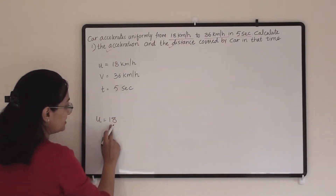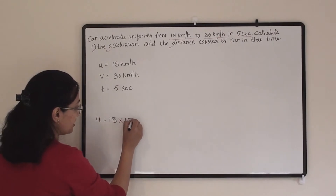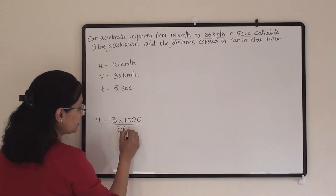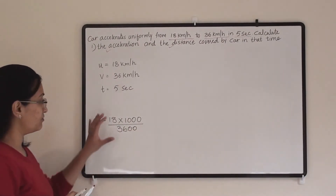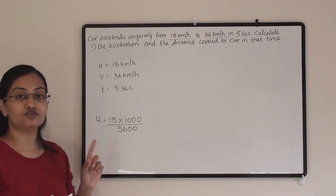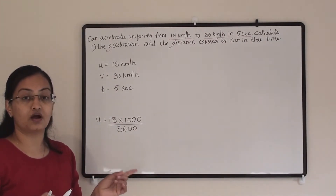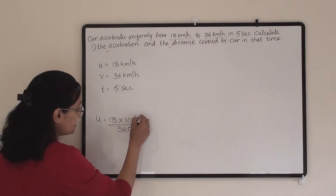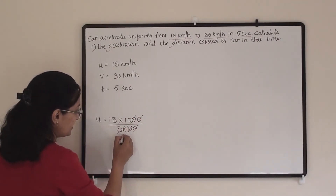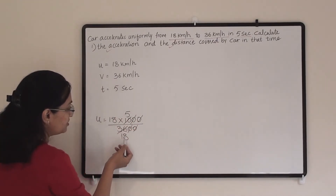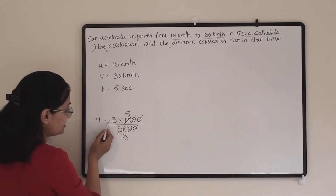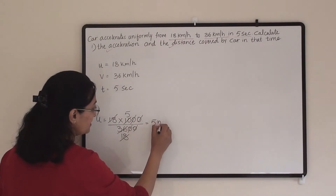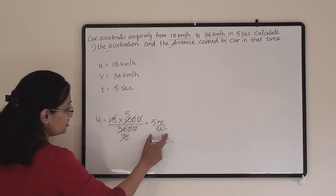To convert u = 18 km/h: multiply by 1000 to convert kilometers to meters, and divide by 3600 to convert hours to seconds. If you have any doubt about this, check my video on conversion factor km/h to m/s. Cancelling two zeros, we get 18 over 5, then 18 and 18 cancel out, giving us 5 meter per second. So initial velocity u = 5 m/s.